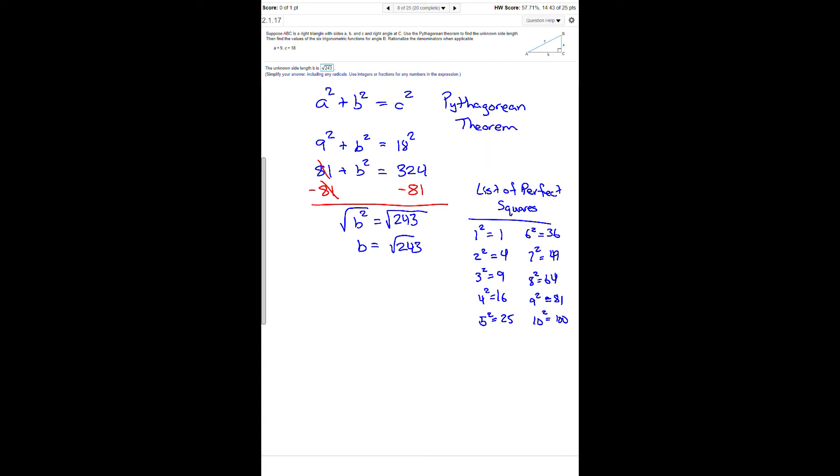We have to figure out if 243 divided by the numbers on the right side of these equations in the list of perfect squares gives us a nice, pretty number. When we divide, do we get one?